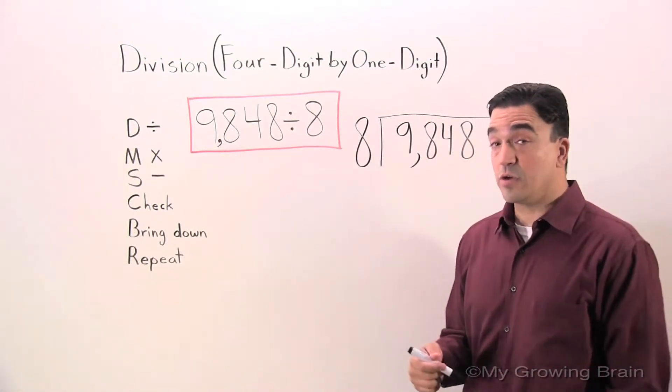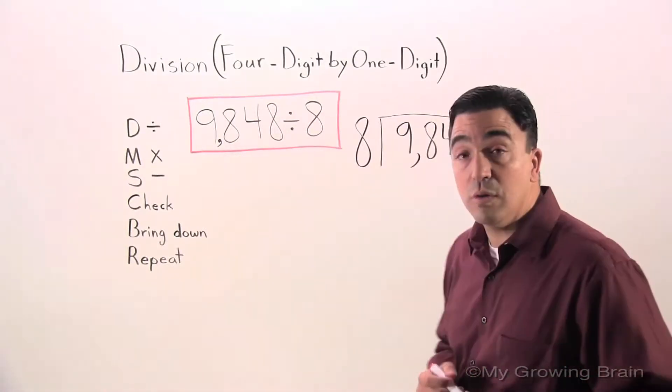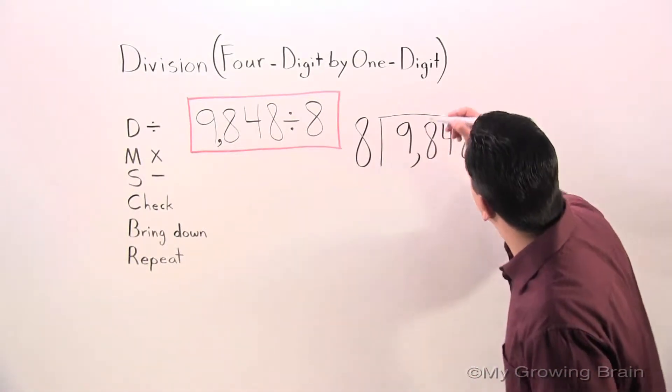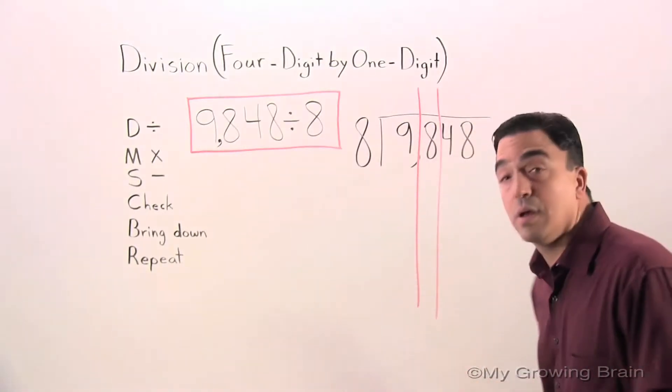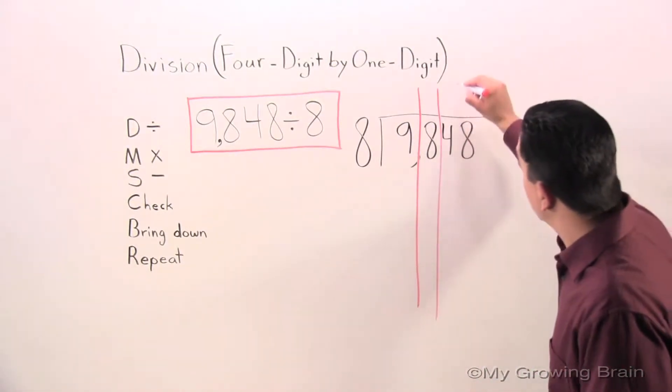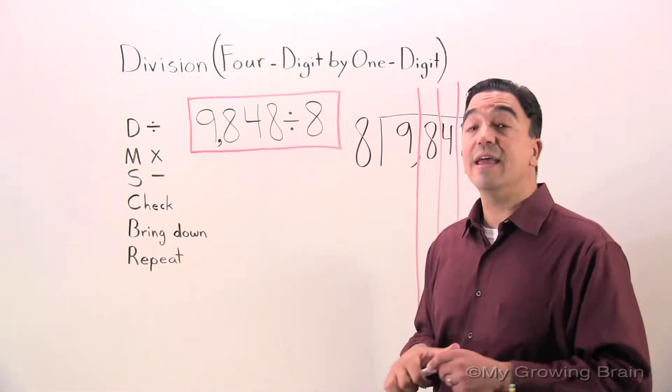Now, something Coach Mike always does before he proceeds, I am going to make columns to organize my work, putting a column between each digit in the dividend.